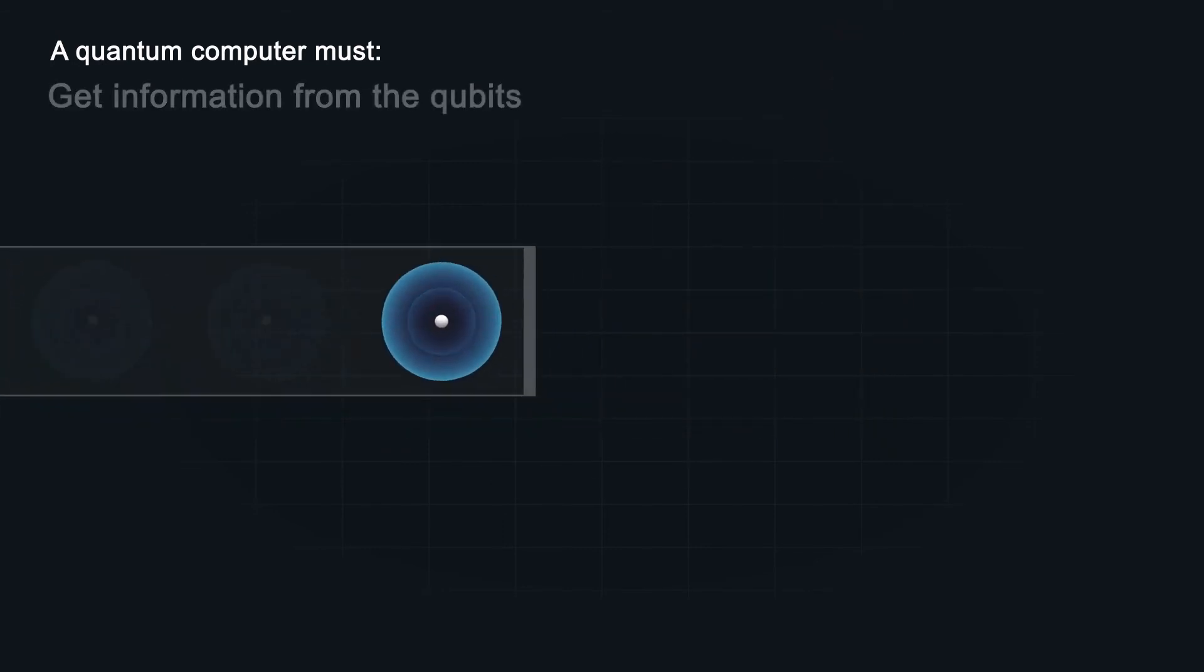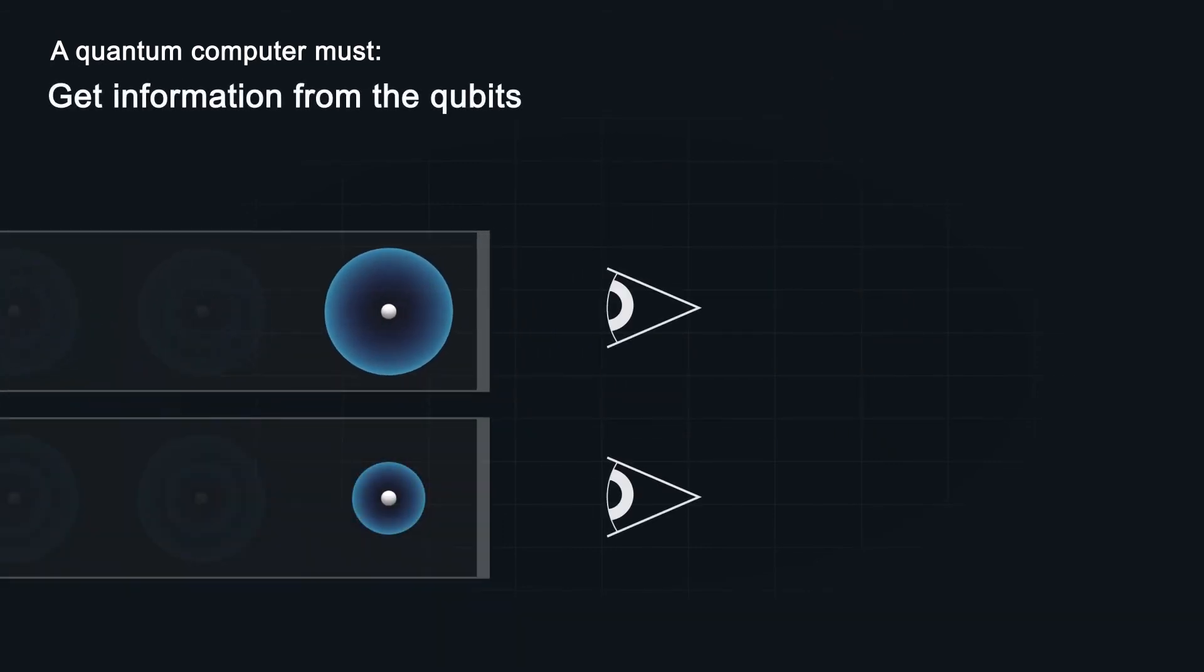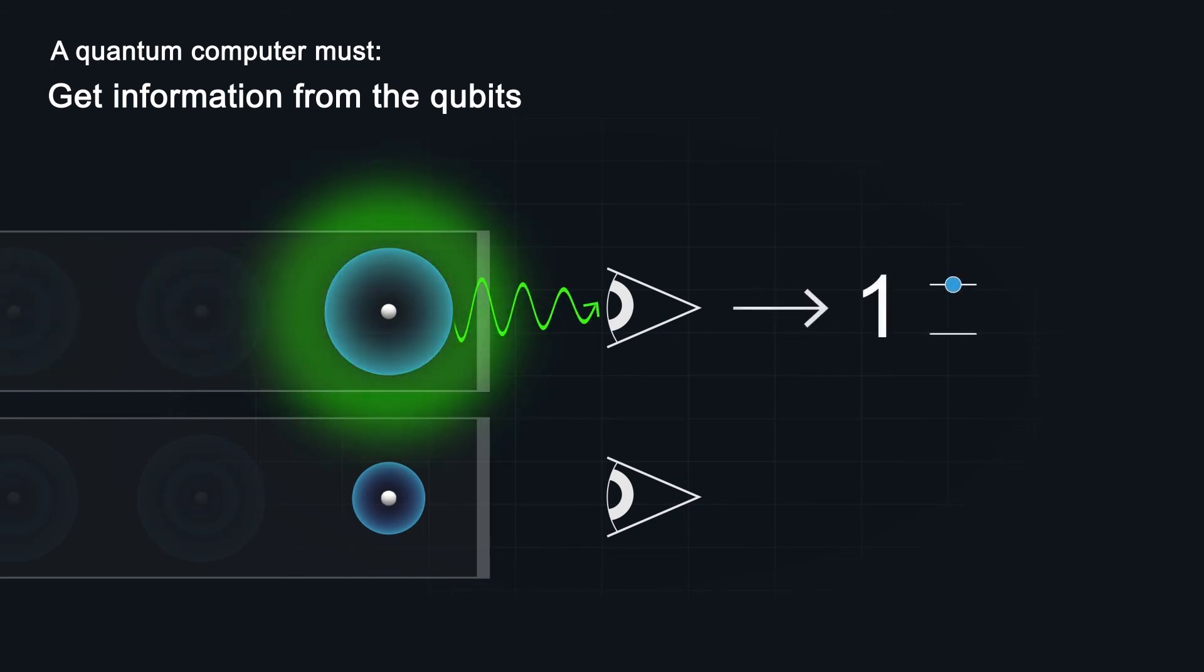To get the result of a calculation, scientists need to tell whether a qubit is in state 1 or 0. Shining laser pulses onto the ions makes only one of the two qubit levels fluoresce. So the result, light or no light, gives information about the calculation.